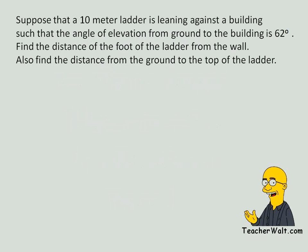First of all, suppose that a 10 meter ladder is leaning against a building such that the angle of elevation from the ground to the building is 62 degrees. Find the distance of the foot of the ladder from the wall. Also find the distance from the ground to the top of the ladder.